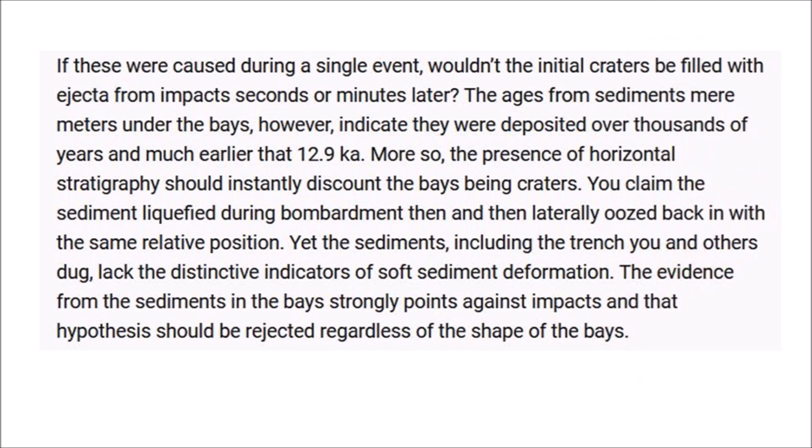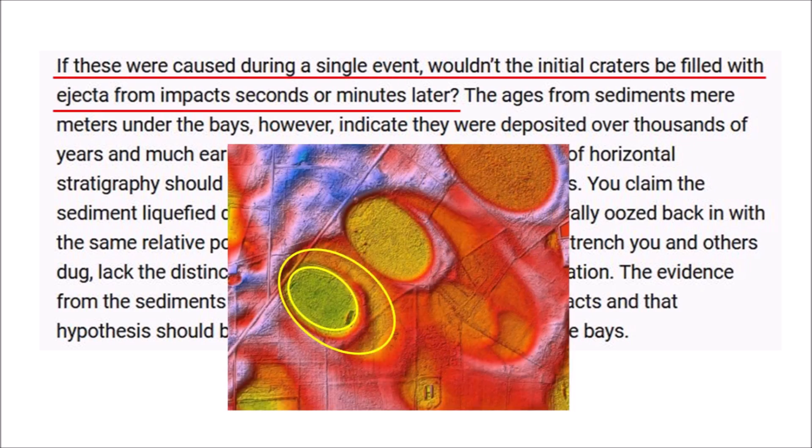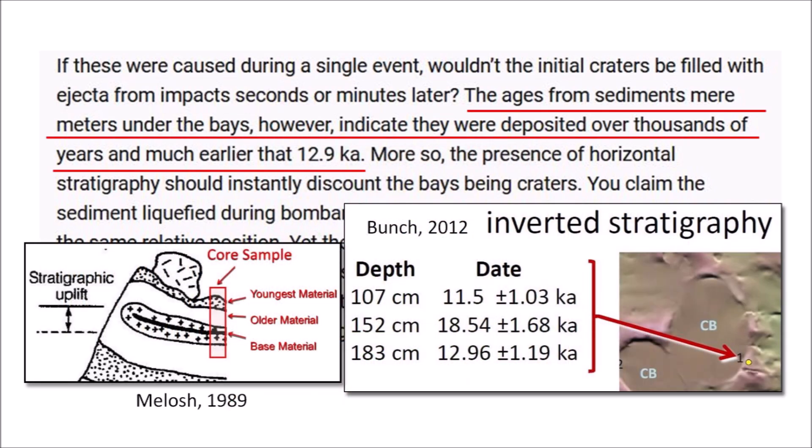The note continues with several comments and questions. If these craters were caused during a single event, wouldn't the initial craters be filled with ejecta from impacts seconds or minutes later? The answer is yes, and this is why we see elliptical basins overlapping each other. These were created by successive impacts. I have highlighted two overlapping basins in this image, but there are several others. The sediments mere meters under the bays, however, indicate they were deposited over thousands of years and much earlier than 12.9 thousand years ago.